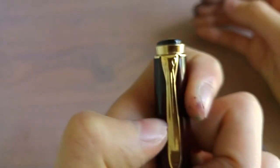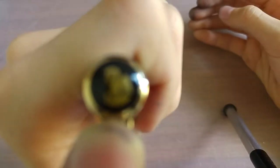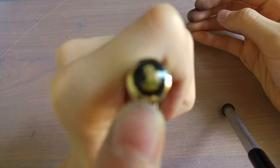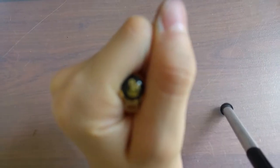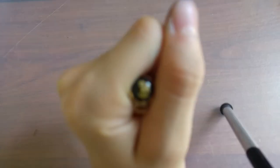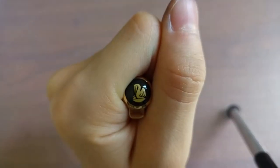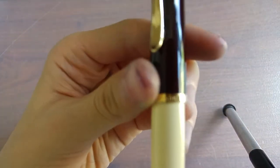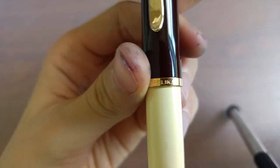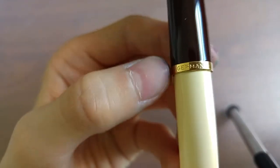The Pelican bill clip with the baby pelican and mother pelican looking down at its child. On the trim ring on the cap here it says Pelican and Germany at the back.